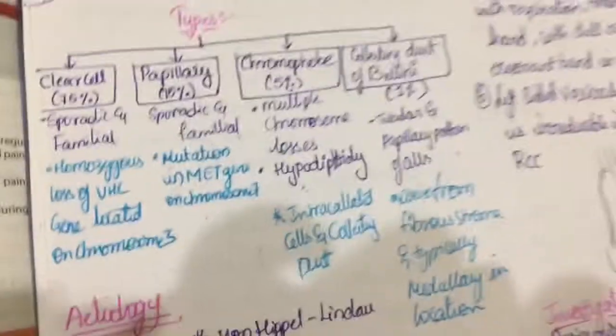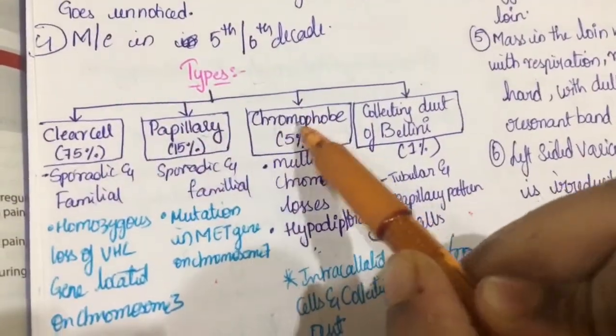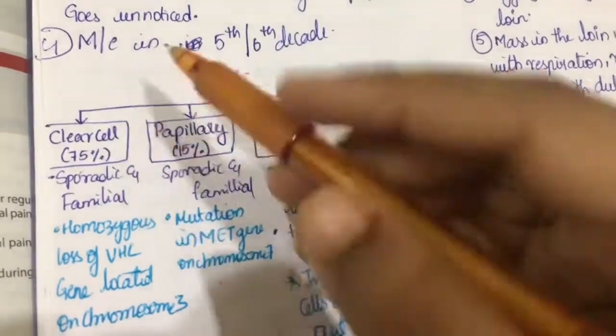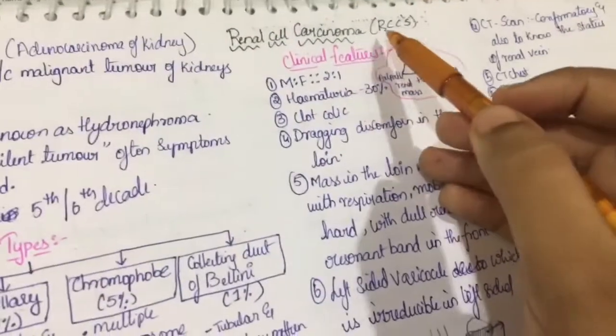We can easily remember types. C. Types. Clear cell, papillary, chromophobe and collecting. 3 C's. CCC. So, RCC. Renal cell carcinoma. RCC. We can remember CC.